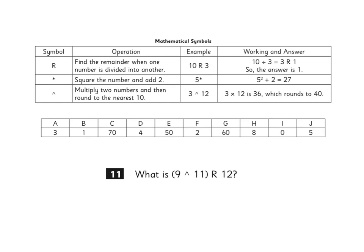Nine multiplied by eleven, of course, is ninety-nine. And if we round ninety-nine to the nearest ten, it becomes one hundred.